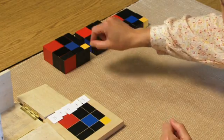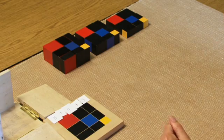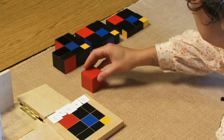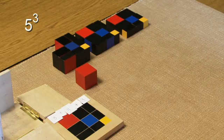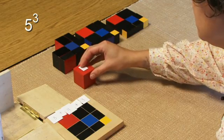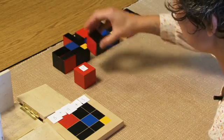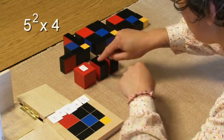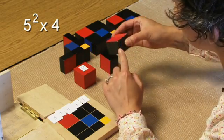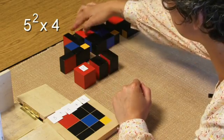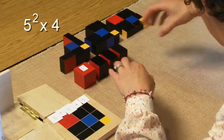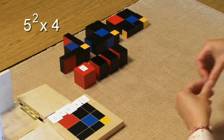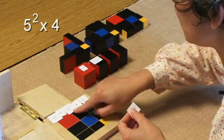To do that, we're going to start pulling down our components and labeling them with our new numeric terms. Here, we have our 5 cubed, and this will be our 5 squared times b. And we have 3 of those. So this is actually 5 squared times 4.